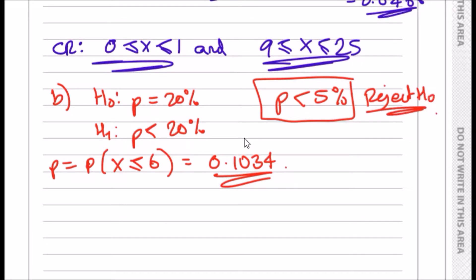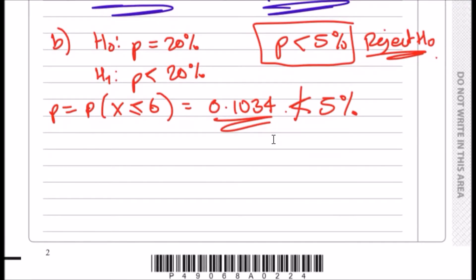Okay, so in this case, 0.1034 is not less than 5%, so we can say there is insufficient evidence, or there is not enough evidence to reject the null hypothesis.